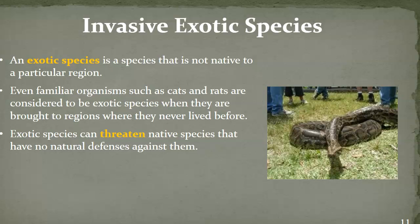Our second type of human impact is invasive exotic species. An exotic species is one that's not native to a particular region. Things that seem so basic today, like cats and rats, were at one point exotic species — they were brought over by different cultures to regions where they had never lived before. Rats traveled on all the boats from our earliest settlers. Exotic species can threaten native species that have no natural defenses against them, and therefore the population of that original species will die out.